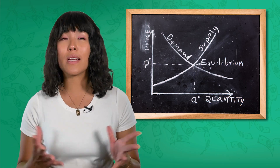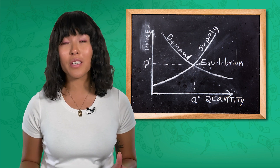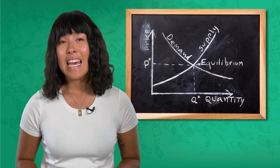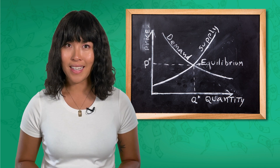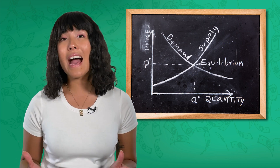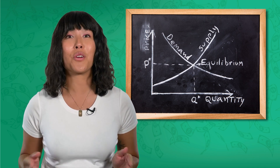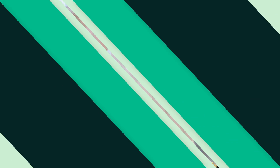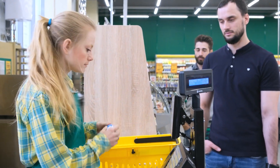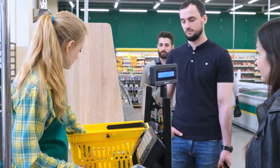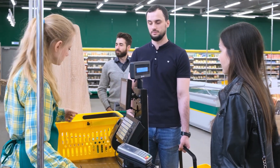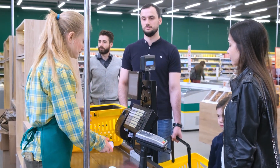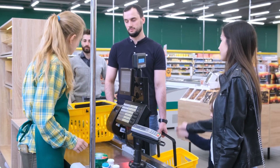If you remember, market equilibrium occurs at a price when the consumer demand for a good or service is the same as the quantity supplied by producers — it's that point where our supply and demand curves intersect. At that price, every consumer with demand for a good or service is able to purchase it, and producers are able to sell all of the units they supply to the market.